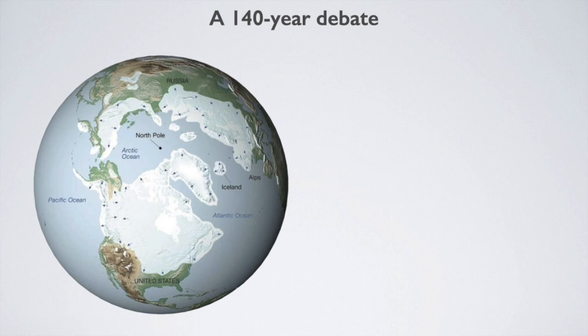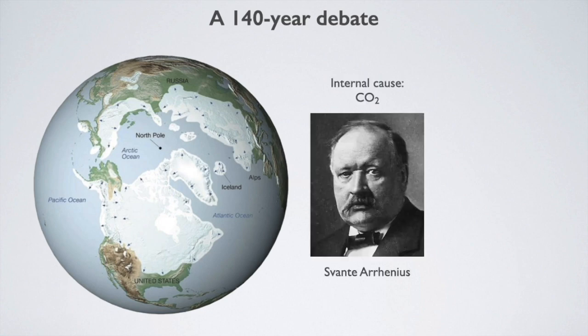Most of the time, the northern part of Eurasia and North America is covered by huge ice sheets. Short interglacials occur when the ice sheets melt. This was discovered 200 years ago, and the first seriously considered theory was proposed by Svante Arrhenius around 1900, who said that glaciations could be caused by changes in CO2.